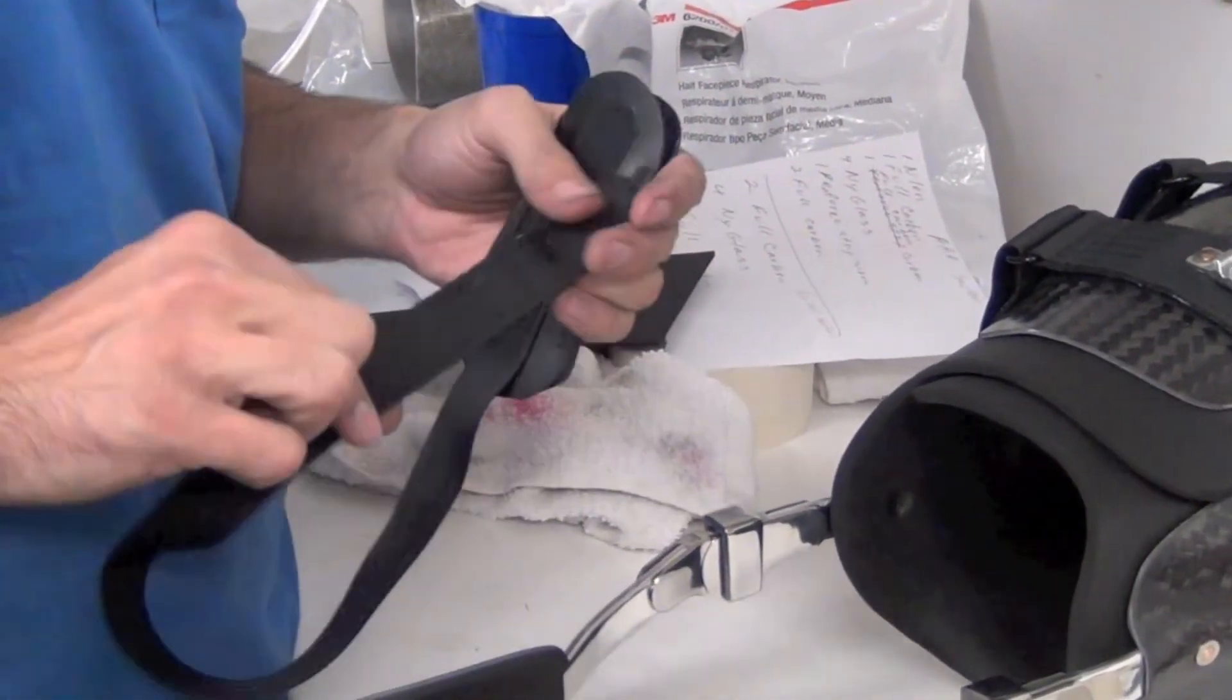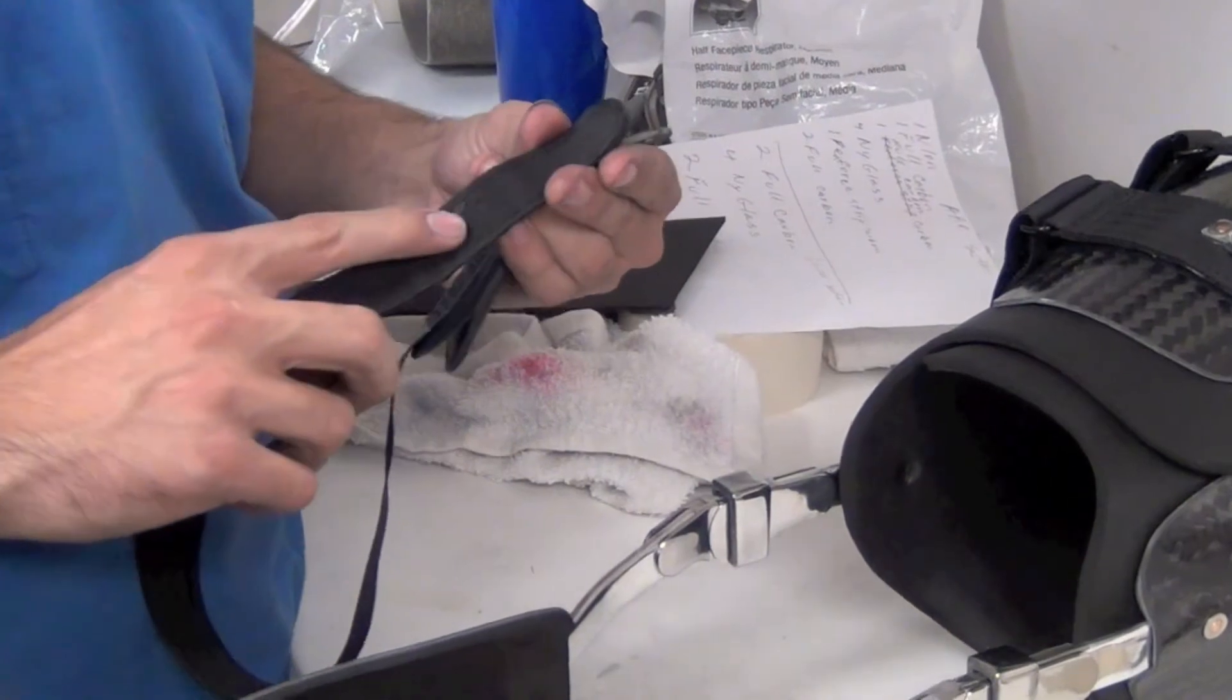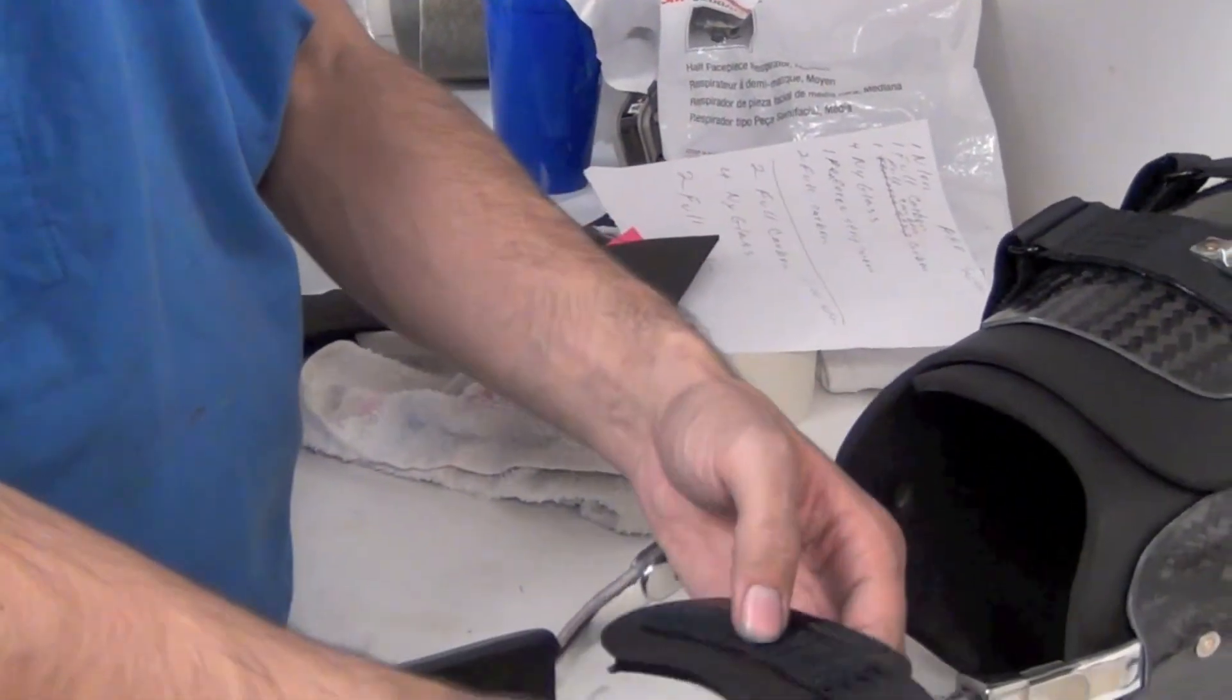So this is the complete infrapatellar strap. And you can see the cut-offs I sewed on there. And this is how you put it on.